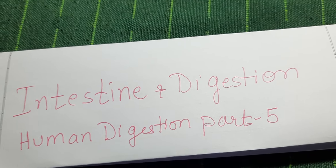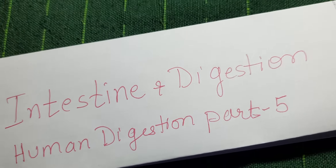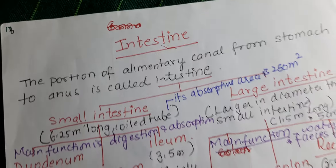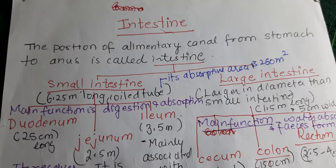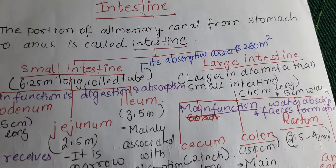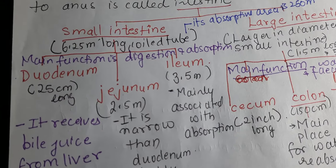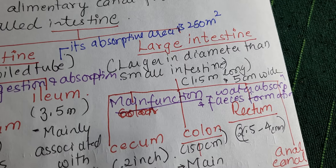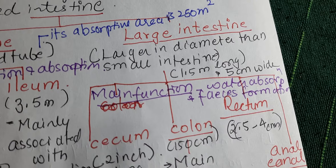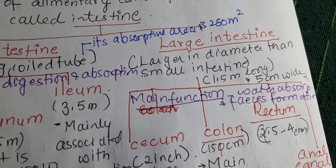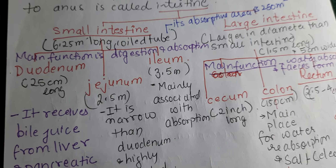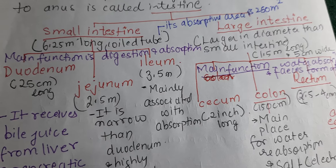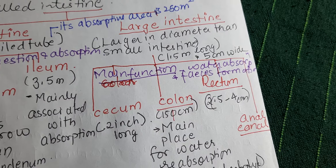Now we'll be talking about the role of intestine in digestion. The intestine is the portion of the alimentary canal from stomach to anus. It is divided into two parts: small intestine and large intestine. Small intestine is 6.25 meters long, whereas large intestine is larger in diameter and 1.5 meters long. The main function of small intestine is digestion and absorption, whereas the main function of large intestine is water absorption and feces formation.